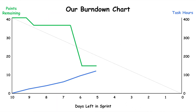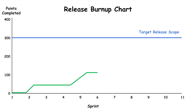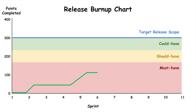Some teams will burn up task hours completed and burn down story points remaining on the same graph. You can also use a burndown or burn-up chart to track progress against a release. Instead of measuring story points and days remaining in the sprint, you can track — even loosely — estimated story points across all stories in a given release against sprints. If you've done robust release planning, you can even indicate which of these points reflect must, should, and could release stories for any given release date.